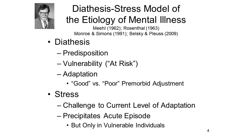Looking backward from that acute episode, we can examine the patient's level of premorbid adjustment, or what is sometimes called premorbid personality. In medicine, the term premorbid refers to the patient's status before he or she became ill. Individuals with good premorbid personality carry relatively little diathesis, or have made a relatively successful adjustment to a relatively high level of diathesis. Individuals with poor premorbid personality carry relatively high amounts of diathesis, or have made a relatively unsuccessful adjustment to a relatively low level of diathesis.